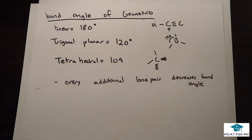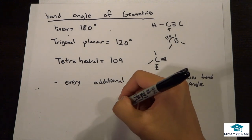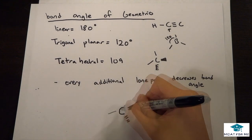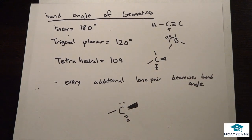But if we add a lone pair, so for example, say we had - so now this is still tetrahedral geometry, but now it's going to be a trigonal pyramidal shape. So we add a whole lone pair, right?